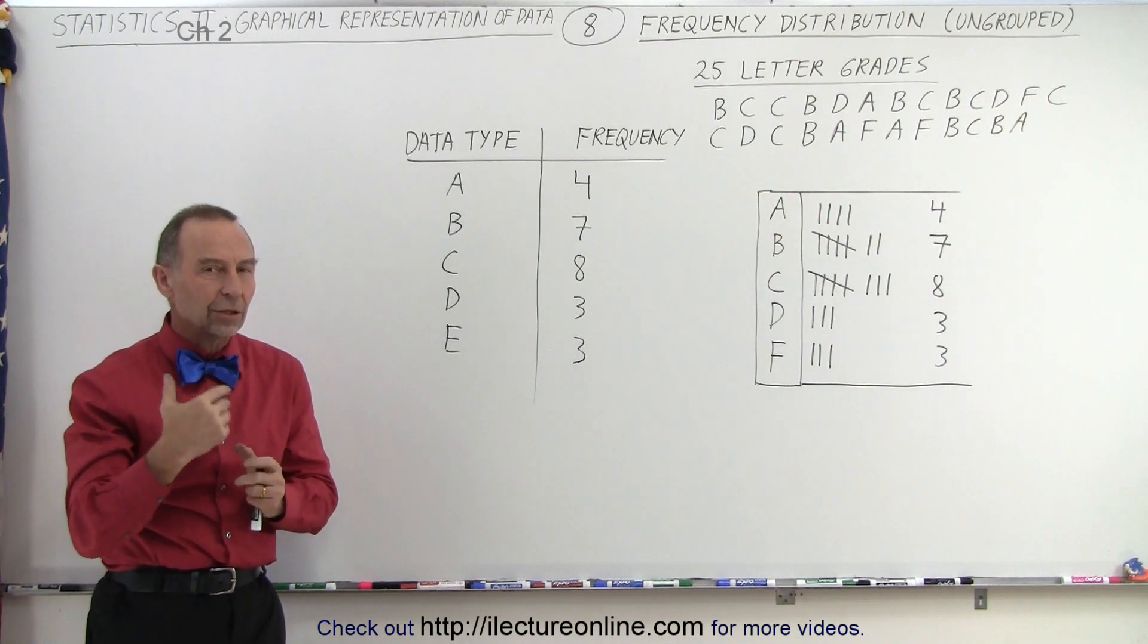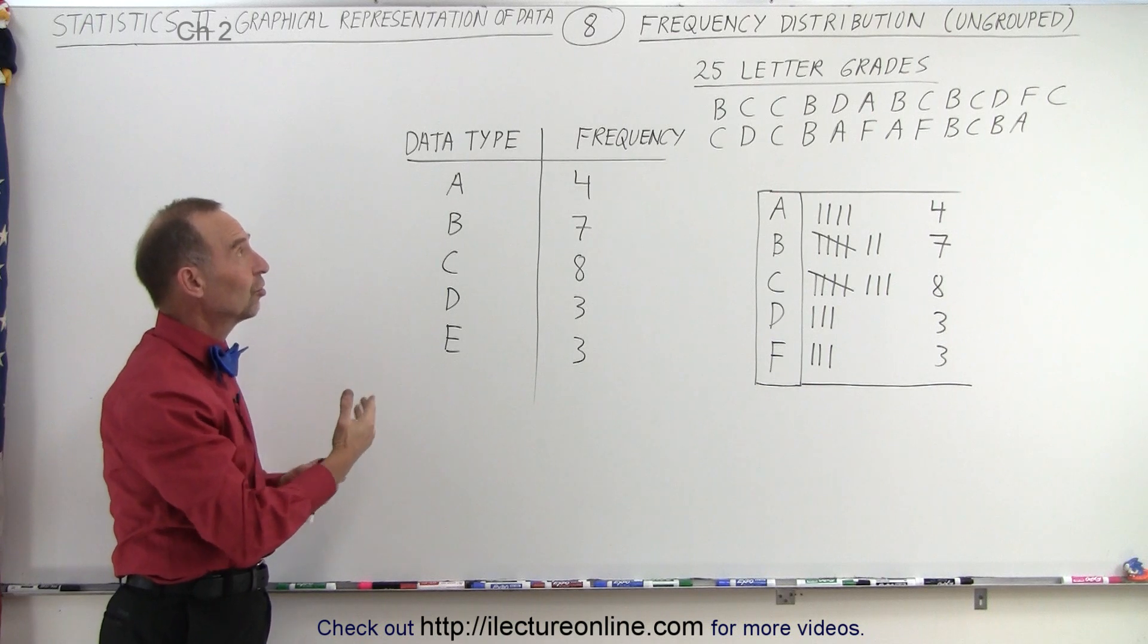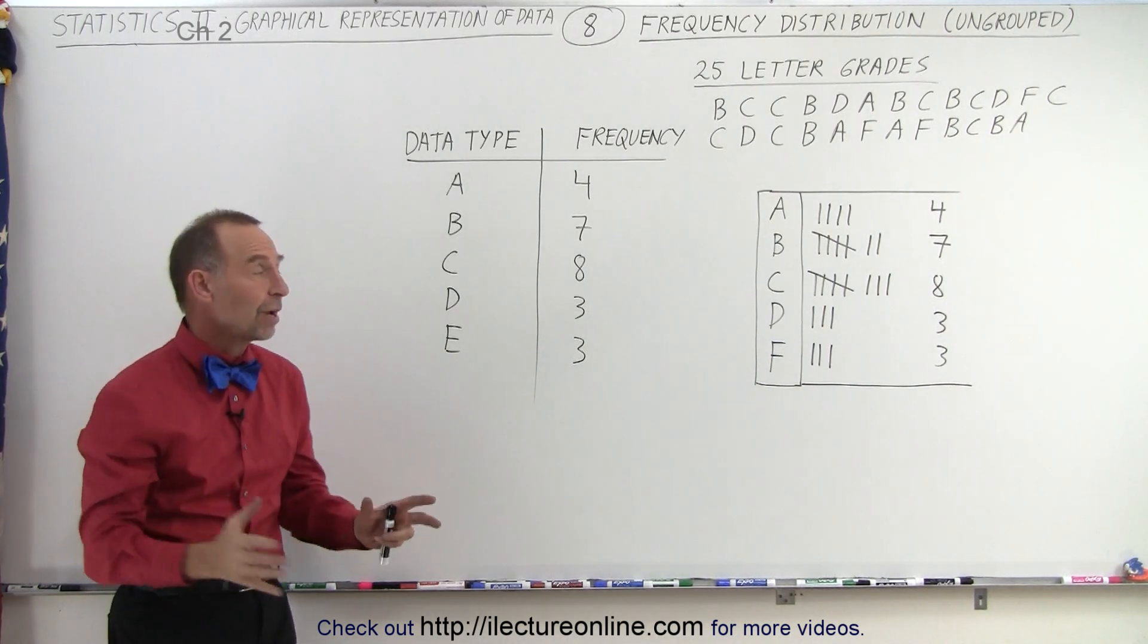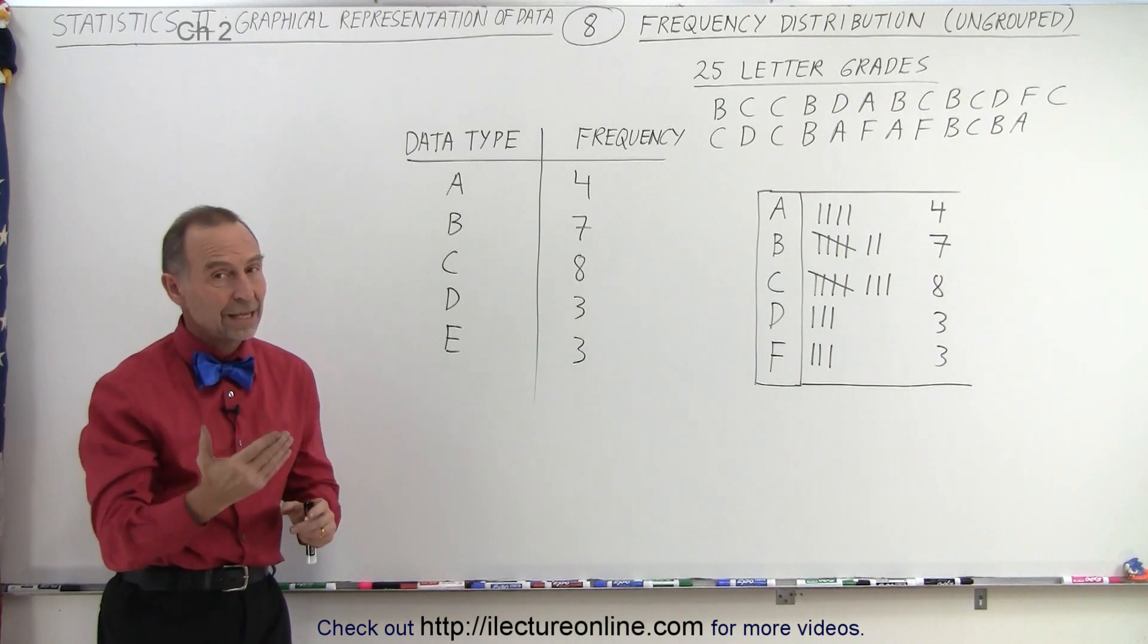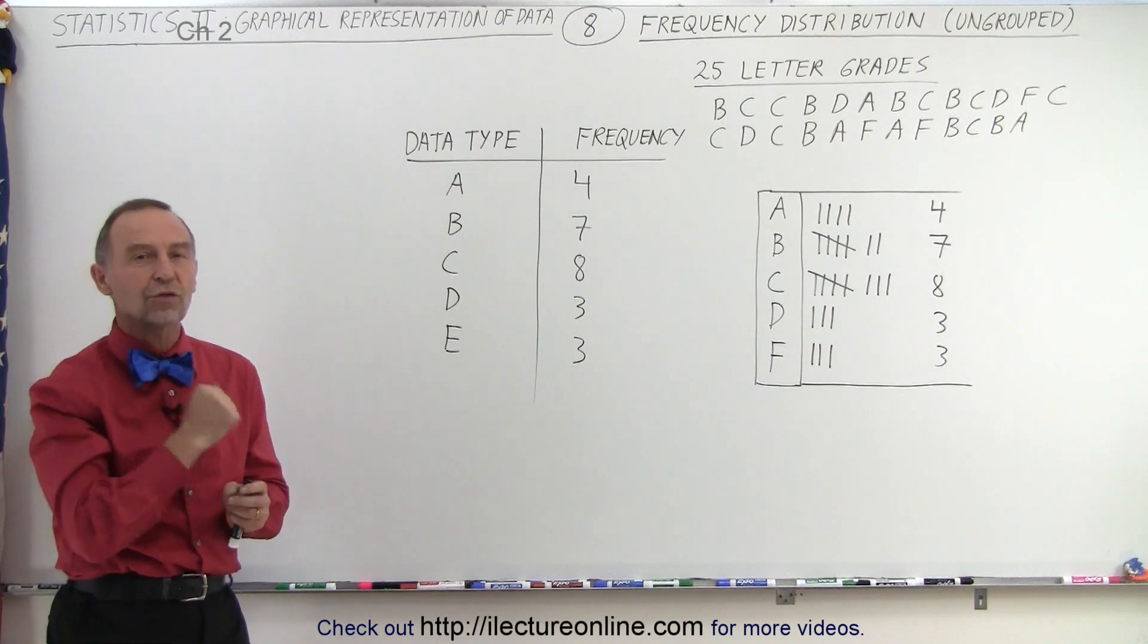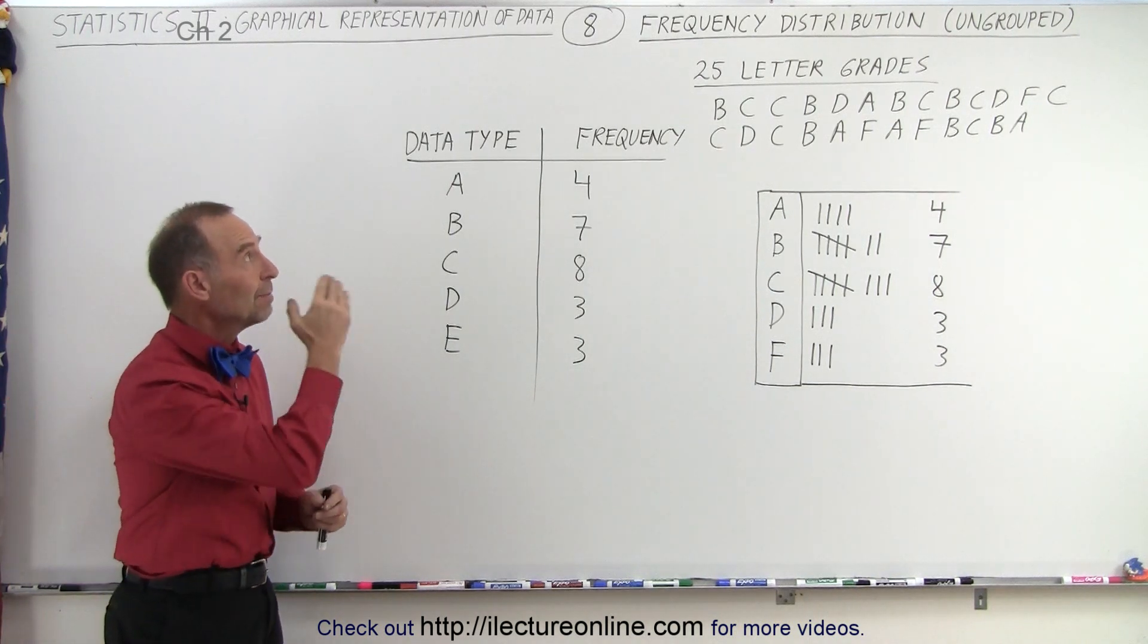So we're going to take a look at the next type, which is the grouped frequency distribution, to see how that compares to what we have over here. Here, it's simply a specific data type with a specific frequency of occurrence associated with it. And that's what we mean by the frequency distribution when they're ungrouped.